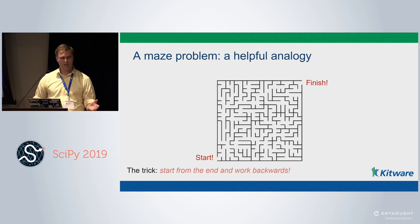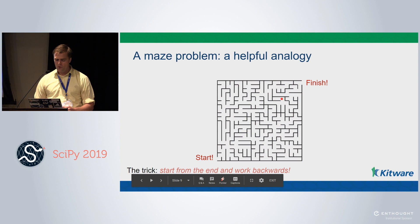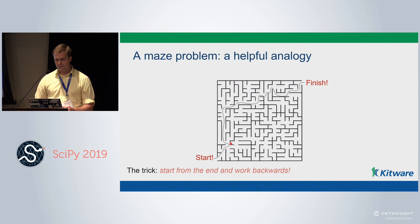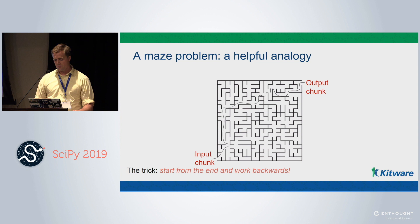The trick to remember for this maze problem and for doing streaming pipelines for images is: start at the end and work backwards. If we start at the end, the solution is actually pretty easy to find, because the maze is set up with many options from the beginning but works cleanly in reverse. For streaming pipelines, we start from an output chunk and work backwards to figure out what input chunk we're going to use.